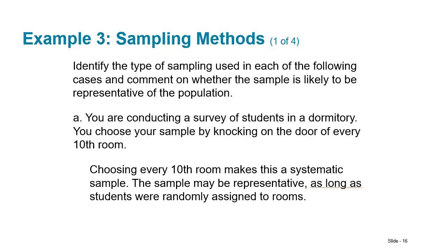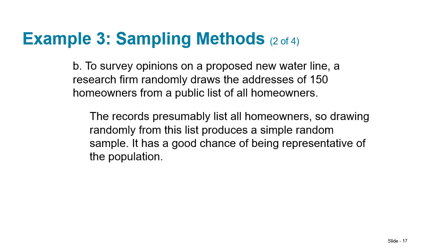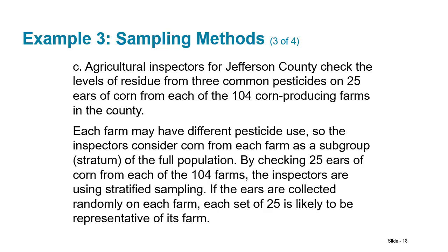Let's identify the sampling type in each scenario. Knocking on every 10th dorm room — that's systematic sampling due to the pattern. Randomly drawing 150 homeowner addresses from a public list — that's simple random sampling, like names from a hat. Taking 25 ears of corn from each of 104 farms — that's stratified sampling, since the population is broken into subgroups by farm and randomly sampled within each. Anthropologists studying skulls found at three specific sites — that's a convenience sample, as they must use what's available.